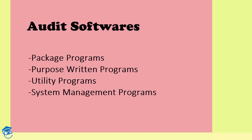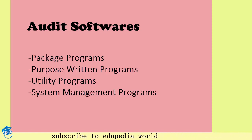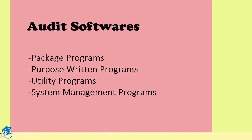Coming to audit softwares — what you can use if I talk about CATs — what are the different types of audit softwares that are usually being used while auditing a client? Number one is package programs, number two is purpose written programs, number three is utility programs, and number four is system management programs.